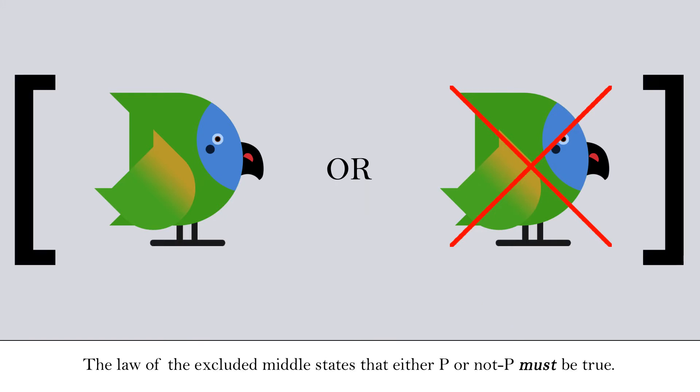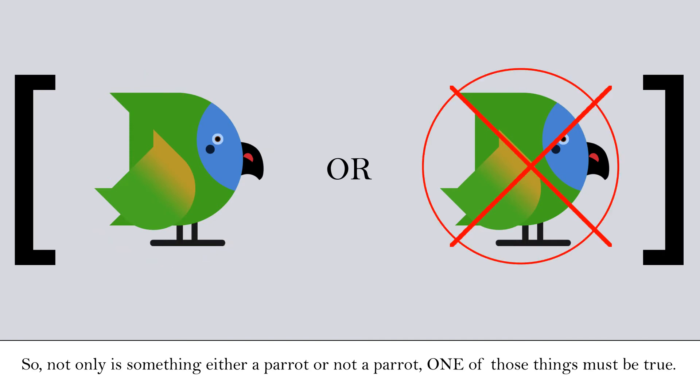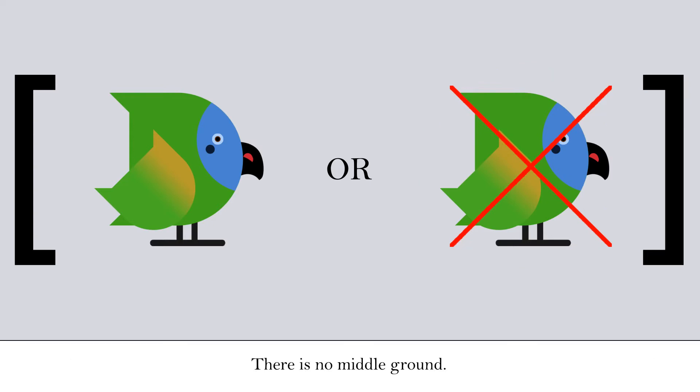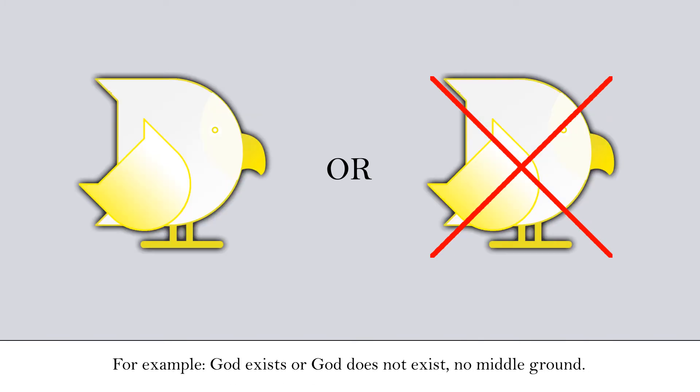The law of the excluded middle states that either p or not p must be true. So not only is something either a parrot or not a parrot, one of those things must be true — there is no middle ground. This also sets up the idea that in order for arguments to be valid, they must set up a true dichotomy. For example, God exists or God does not exist — no middle ground.